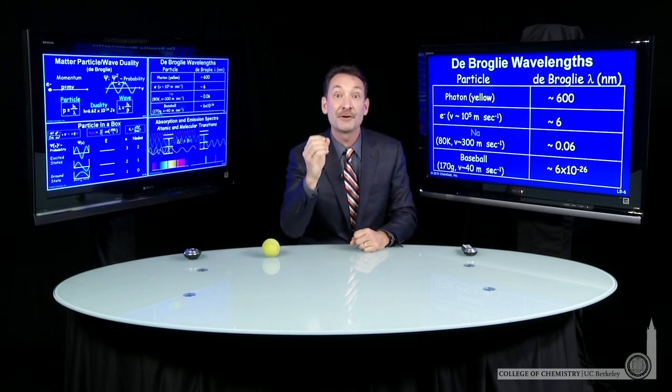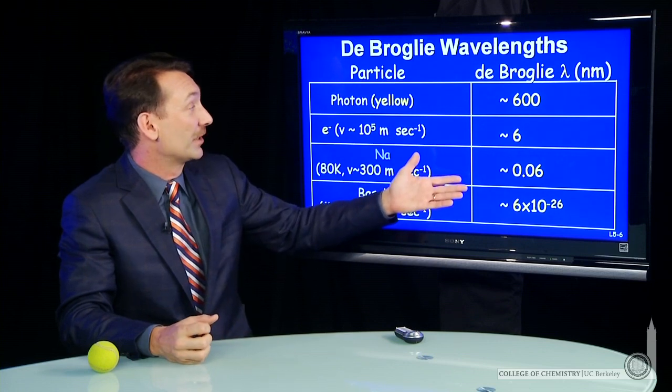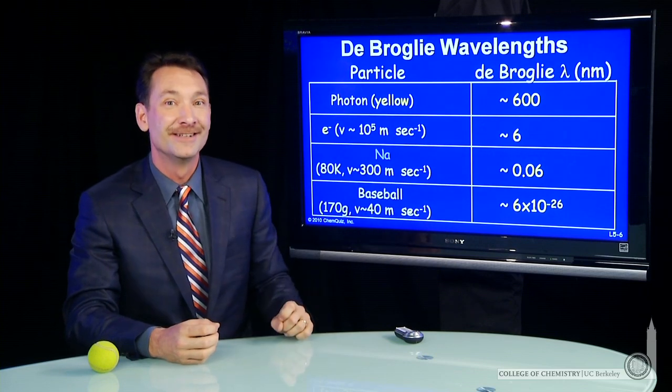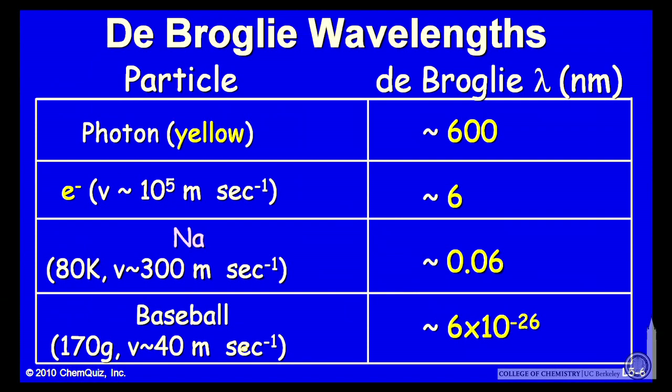Let's look at some concrete examples to see actual particles and what their de Broglie wavelength would be. Here's a list of particles and their de Broglie wavelengths. A photon, that's a particle of light. That obviously has a wavelength that we've talked about. A yellow photon, its de Broglie wavelength is 600 nanometers.